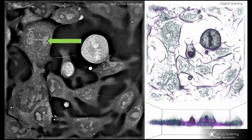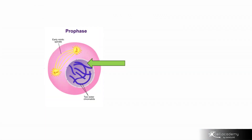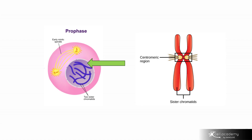During prophase, the nuclear membrane dissolves and the chromosomes start condensing. Due to this condensation, you can identify these structures really well as they have a strong refractive index. This is when the chromosomes condense into the characteristic X structures that we see in textbooks. This X is formed by two sister chromatids containing identical genetic information.